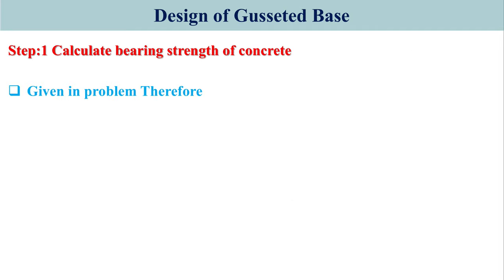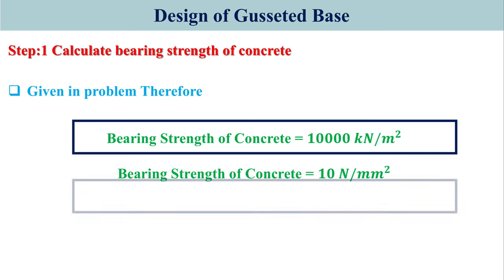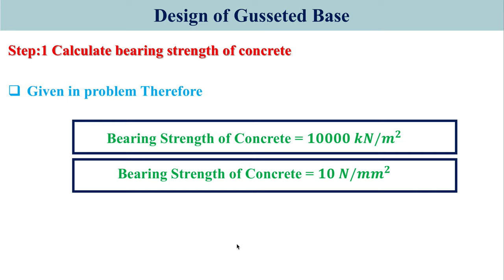Step 1: Calculate bearing strength of concrete. It is already given in the problem so there is no need to calculate it. Bearing strength of concrete is 10,000 kN per meter square. Converting to N per millimeter square: multiply by 10³ to change to Newton, divide by 10⁶ to change meter square to millimeter square, giving 10 N per millimeter square.